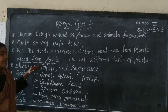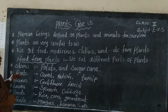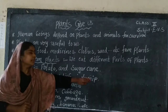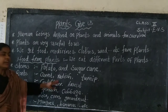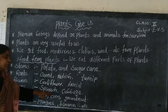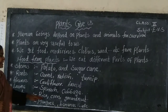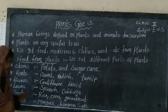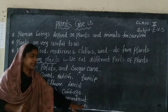Stem, for example: potato and sugar cane. Roots, for example: carrot, radish, and turnip. Flowers, for example: cauliflower and broccoli. Leaves, for example: spinach and cabbage. Seeds, for example: rice, corn, and groundnut. Fruits, for example: mangoes and bananas, etc.